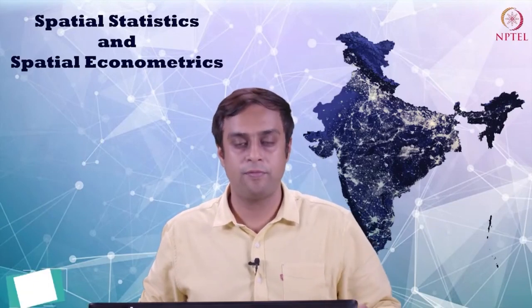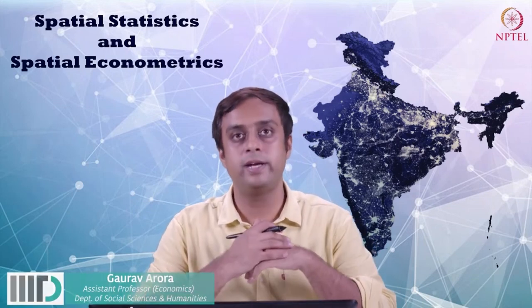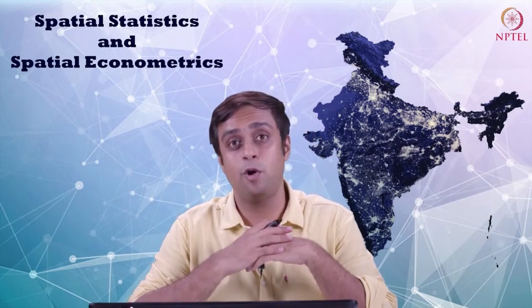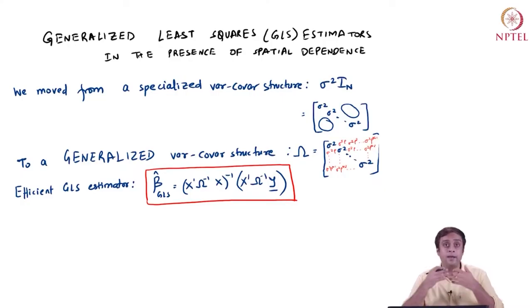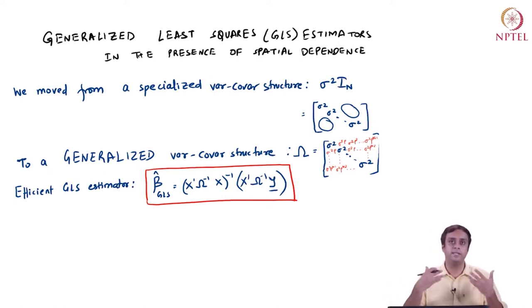Welcome back to part 3 of lecture 17. Now that we have established that the least squares estimators are no longer efficient if you have spatial dependence in model errors, and that by consequence the least squares estimators are no longer BLUE, we move on to a new estimation strategy — what we call the generalized least squares estimators.